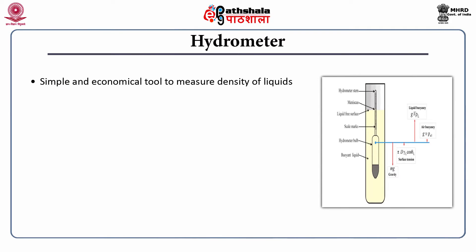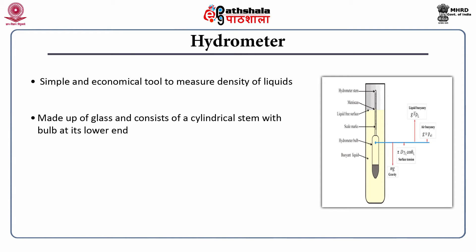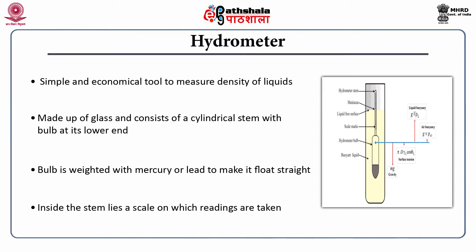A hydrometer is a simple and economic tool to measure density of liquids. It is generally made up of glass and consists of a cylindrical stem with a bulb at its lower end. The lower half has a bulb and the upper half has a stem which is graduated. This bulb is weighed with mercury or lead — generally lead — to make it float straight. Once you dip the hydrometer into water, it shall float, and the calibration on the stem gives you the reading.